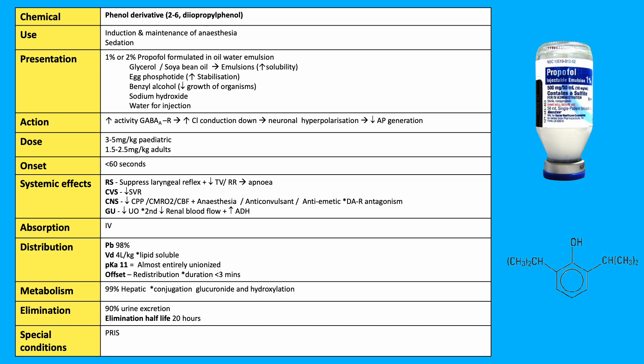Cardiovascular: it reduces SVR. CNS: it reduces CPP, CMRO2, and cerebral blood flow, may lead to amnesia, and has anti-convulsant and anti-emetic effects. GU: reduces urine output secondary to reduced renal blood flow and increased ADH release.